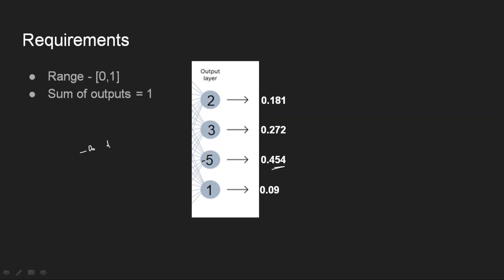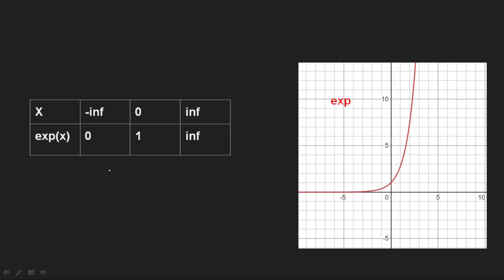Let us simplify our problem. My inputs can range from minus infinity to plus infinity. Instead of getting values directly between 0 and 1, I need values between 0 and infinity — I will then get the range between 0 and 1 by normalization. If there is a way to transform inputs from minus-infinity-to-plus-infinity into 0-to-infinity, my problem is solved. We can do this exactly using the exponential function, whose input ranges from minus infinity to plus infinity but whose output is always between 0 and plus infinity — always positive values.